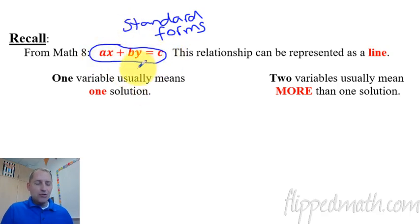This A, B, and C, those are usually numbers. We have an A, a B, and a C as numbers. X and Y are the actual variables. I know that's kind of confusing when we have so many letters going on here. This relationship can be represented as a line. You can graph this stuff. When we have only one variable instead of two, see this one we have an X and a Y, we have two variables.